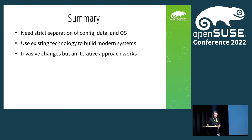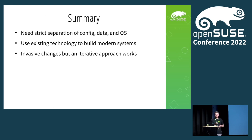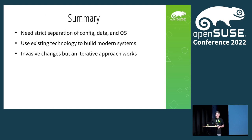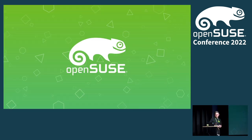To summarize: if you build a system like this you get a strict separation of config, data, and the operating system. We're using existing technology to build modern systems — no new delivery mechanism, no new build mechanism, just plain old RPMs used in a new way. It may look invasive, and it is to some degree, but it's a completely iterative approach: we can update packages one by one. And that's basically what I wanted to say today.